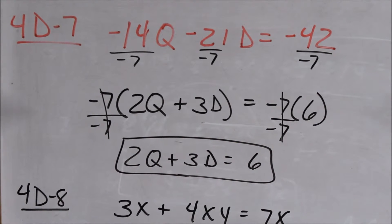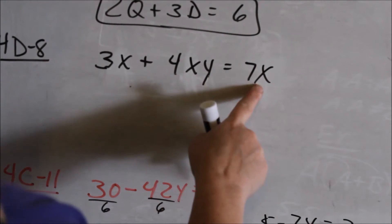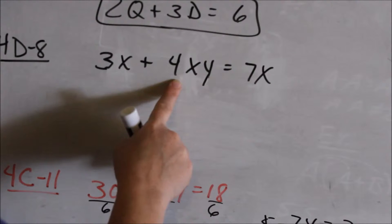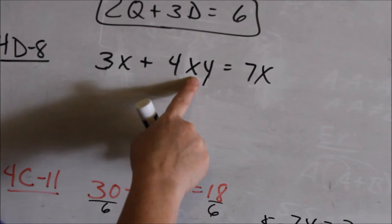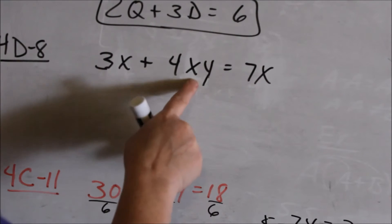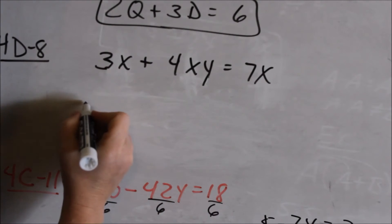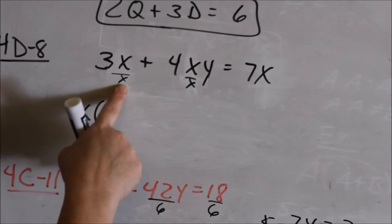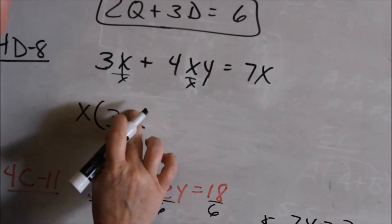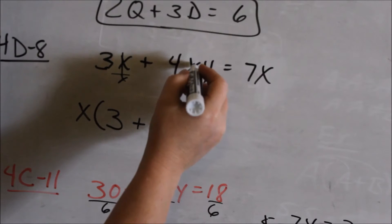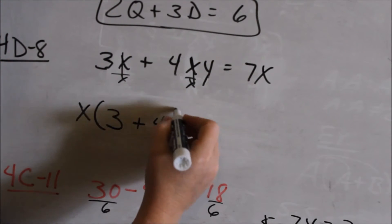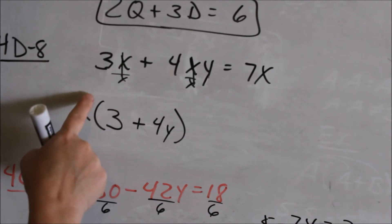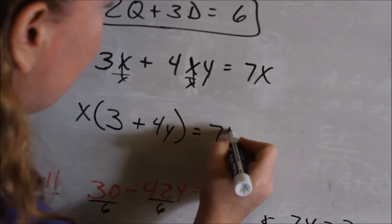They're just asking you to simplify it. Looking at 4D8: 3x plus 4xy equals 7x. For now we're just looking at the left side. You look at the numbers first — 3 and 4 — is there any number we can factor out of 3 and 4? No. So then you look at the letters: x and xy. They have an x in common, so we can factor an x out. Write your x in front, then 3x divided by x leaves 3, and 4xy divided by x leaves 4y. Distributing back: x times 3 is 3x, x times 4y is 4xy — that matches the original.